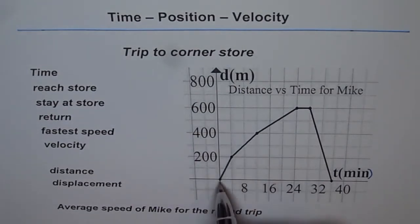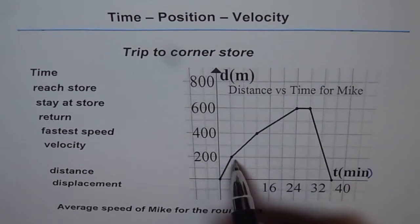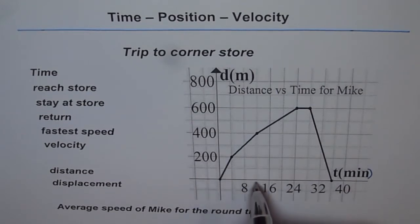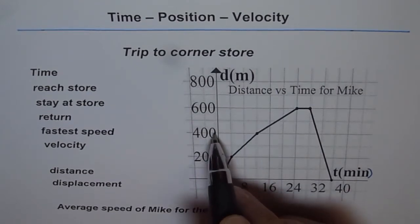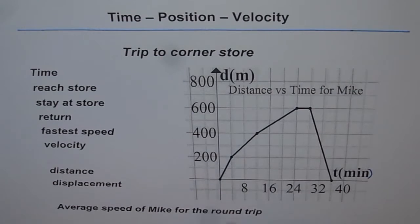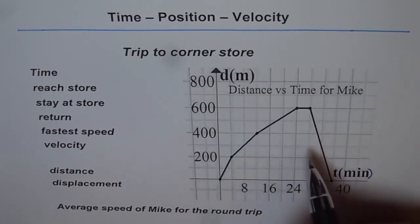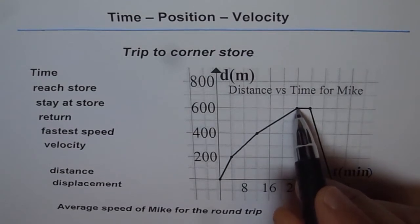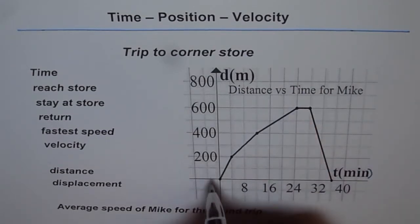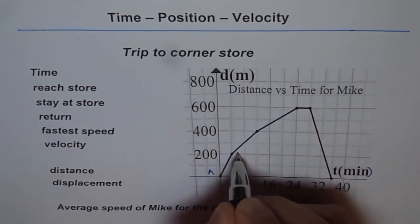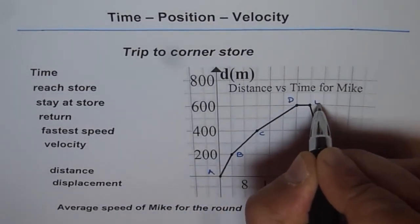In the first 4 minutes Mike covers a distance of 200 meters, and in the next 8 minutes he covers another 200 meters. So in the first 12 minutes he covers a distance of 400 meters. Then finally at 24 minutes he reaches a point and just stops there. Let me label these points as A, B, C, D, and E.